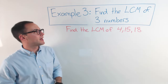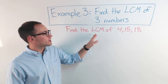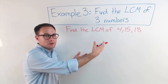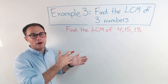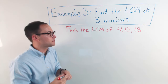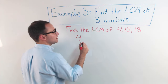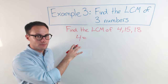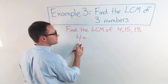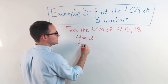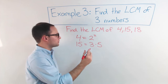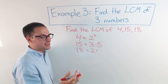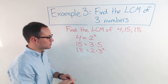Here's the last example for today: find the LCM of three numbers — four, fifteen, and eighteen. Remember that hint about larger numbers or multiple numbers? In this case we'll use prime factorization instead of listing multiples. The prime factorization of four is two squared. The prime factorization of fifteen is three times five — both prime numbers. The prime factorization of eighteen is two times nine, and since nine is three squared, that gives us two times three squared.